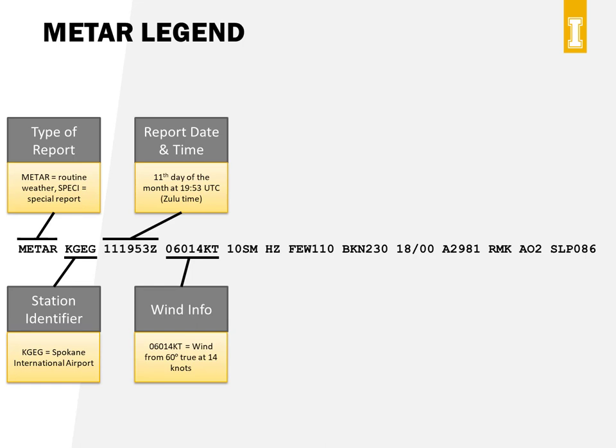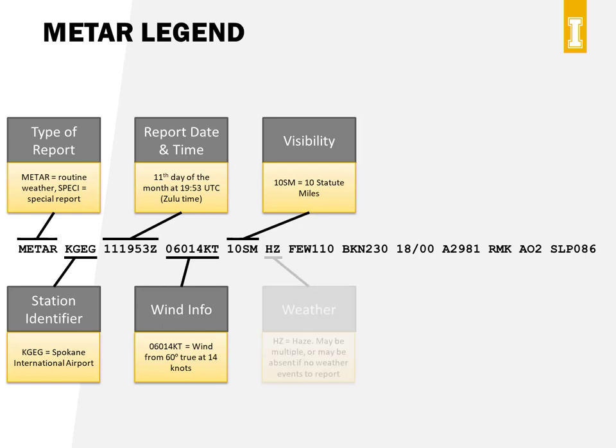Now we're getting into the weather information. The wind block's first three digits tell you the direction the wind is coming from to the nearest 10 degrees — remember this is true direction, not magnetic. The FAA likes to ask whether wind direction in reports is true or magnetic; the rule of thumb is if it's printed, it must be true. The next two digits are wind speed in knots. The following block is visibility in statute miles, followed by codes for different types of weather events, which may be chained together.